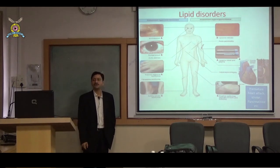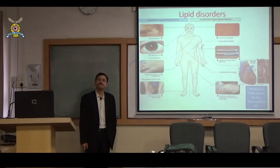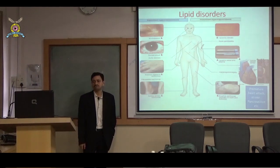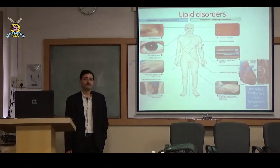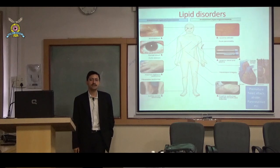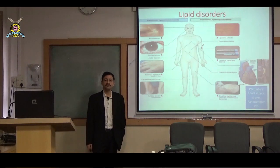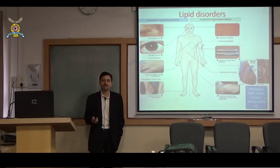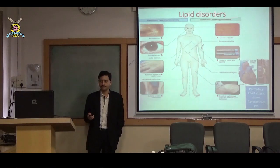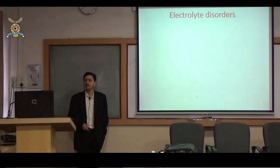Coming to lipid disorders: it's not only about starting cholesterol medication. There are lipid conditions like familial hypertriglyceridemia or familial hypercholesterolemia which, being familial, require counseling and checking of family members. If a young person comes with triglycerides of 500–800, I sit with the patient and tell them to get their first-degree relatives checked — because this may be running in the family and the patient wants to know why their cholesterol is high, which is not always due to diet or faulty lifestyle.